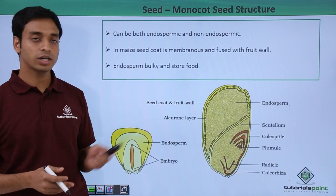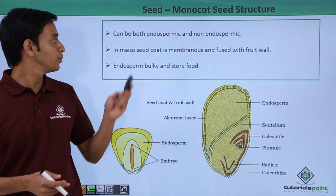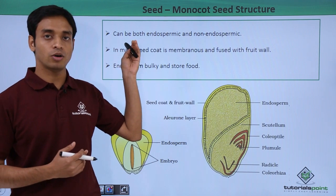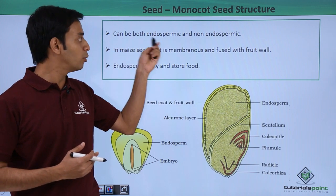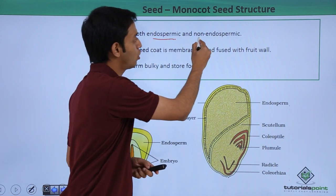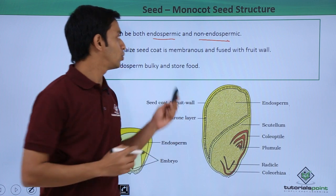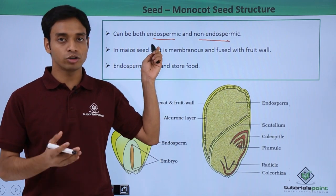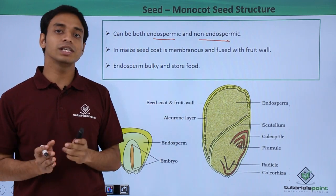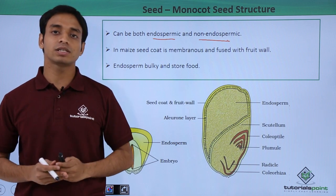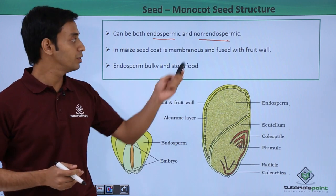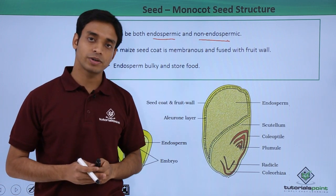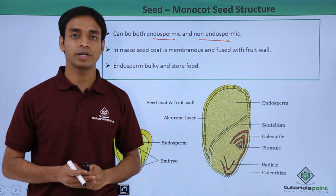Monocot seeds can be both endospermic and non-endospermic. They can show the presence of endosperm — mostly they are endospermic — but at times there are seeds which are non-endospermic, meaning they do not have the presence of endosperm.